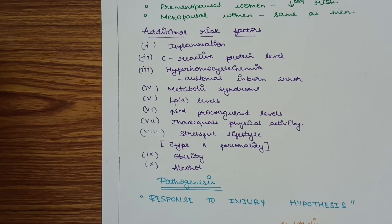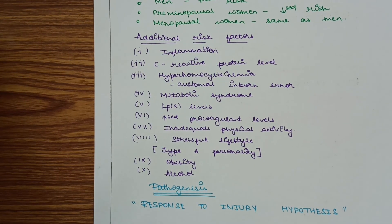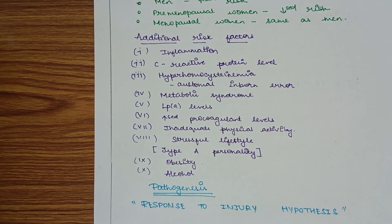Additional risk factors include inflammation, C-reactive protein levels, hyperhomocystinemia (an autosomal inborn error), metabolic syndrome, LPA levels, increased procoagulant levels, inadequate physical activity, stressful lifestyle, type A personality, obesity, and alcohol.